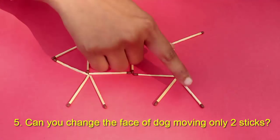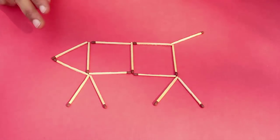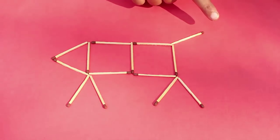Here is a dog facing left. By shifting two matchsticks you've got to make the dog face the right side. It's quite easy.